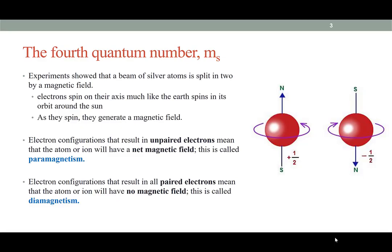When we have two electrons in an orbital with opposite spin, their two magnetic fields cancel out. However, when we have an atom or ion with unpaired electrons, there will be a net magnetic field created by that material.